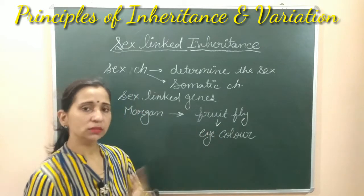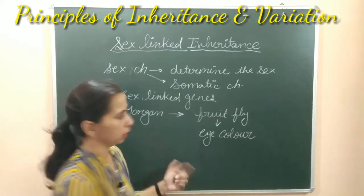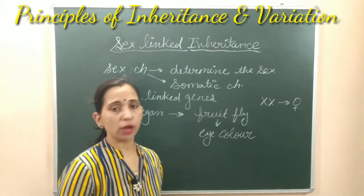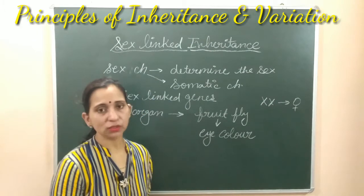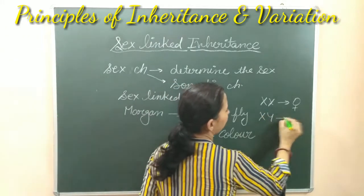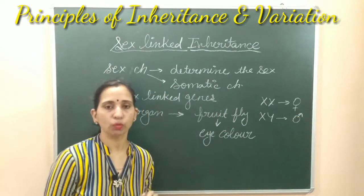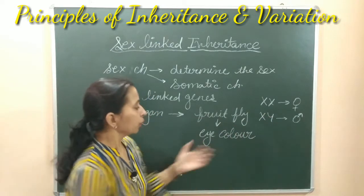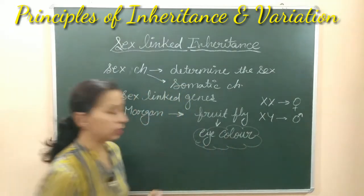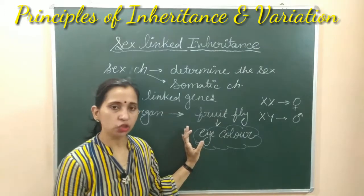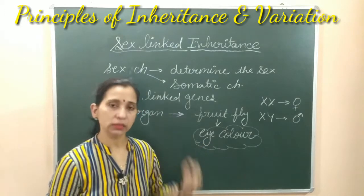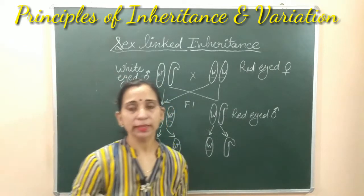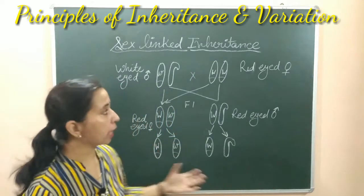We know that fruit fly has the same type of sex chromosomes like human beings. If they have XX chromosomes then the fly will be female, and if they have XY chromosomes then it will be male. Morgan took the eye color character in Drosophila to explain sex linked inheritance. Let's see how the inheritance of eye color is proven by his experiment.